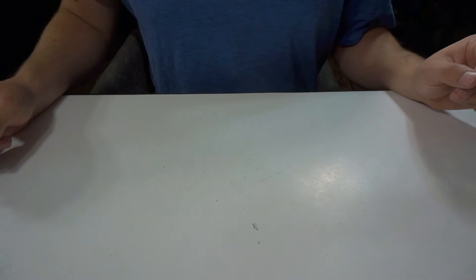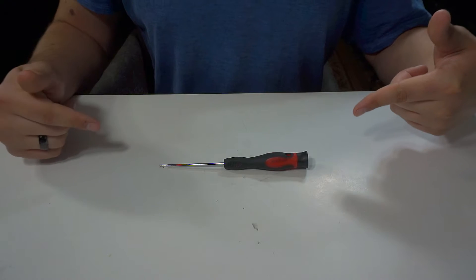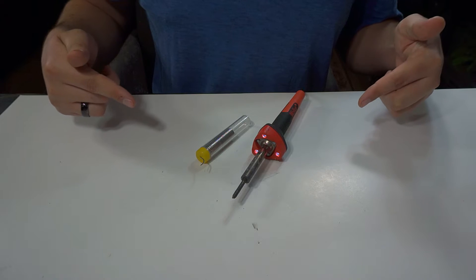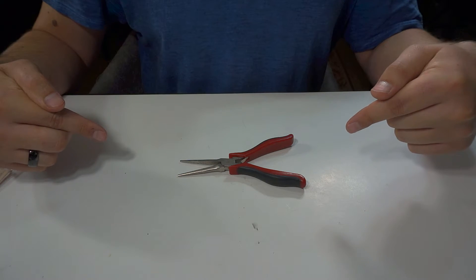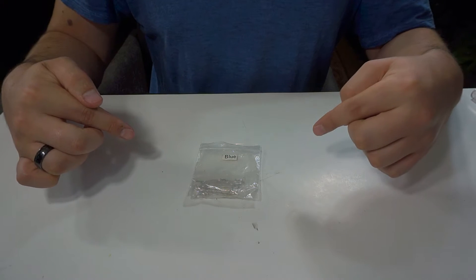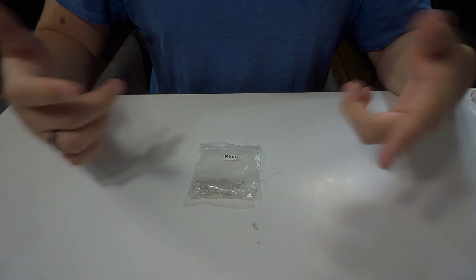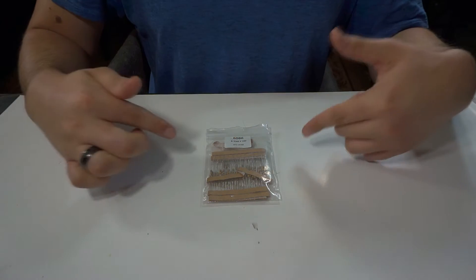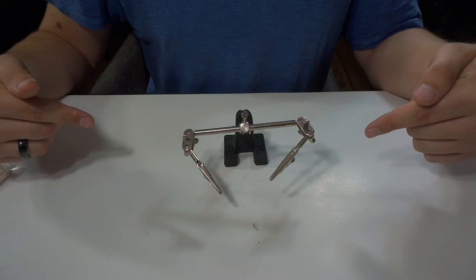Some things you're going to need for this mod are a small flathead screwdriver, some wire cutters, solder and a soldering iron, a pair of needle nose pliers, some 5 millimeter LEDs (I'm using blue), you're also going to need some resistors (I'm using 470 ohm), and some helping hands.